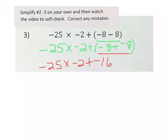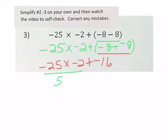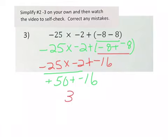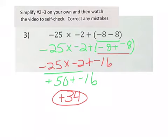Done with parentheses, no exponents, so I move to multiplication. Negative 25 times negative 2 — a negative times a negative is a positive — so that's positive 50, plus negative 16. Now I'm adding a positive and a negative, so different signs: I subtract. 50 minus 16 is 34, and I keep the sign of the higher absolute value. 50 has the higher absolute value, so the answer is positive 34.